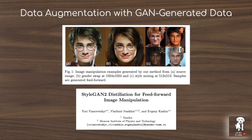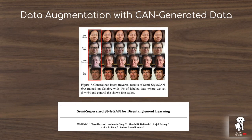StyleGAN 2 distillation for feedforward image manipulation shows how you can transfer styles in StyleGAN models, and semi-supervised StyleGAN for disentanglement learning separates different factors of variation in images and synthesizes new images by controlling those factors — all of which could be useful for creating more diverse datasets for data augmentation and training classifiers or other computer vision models.